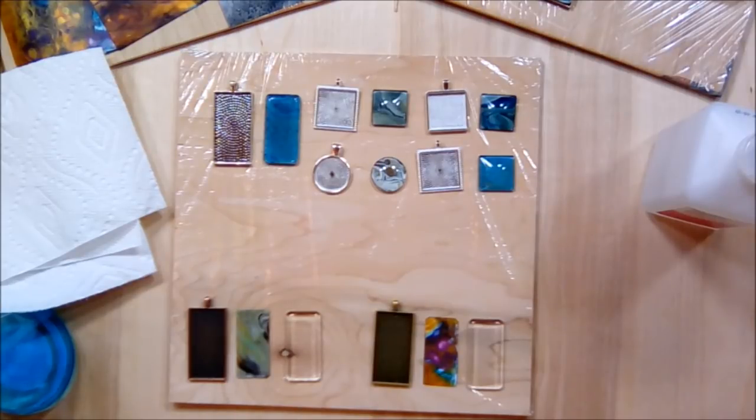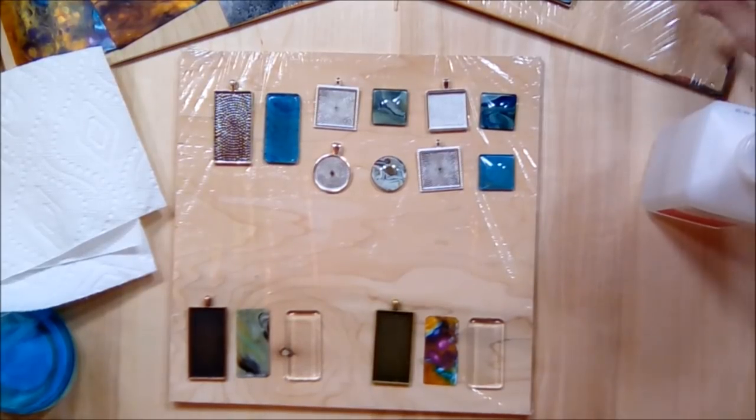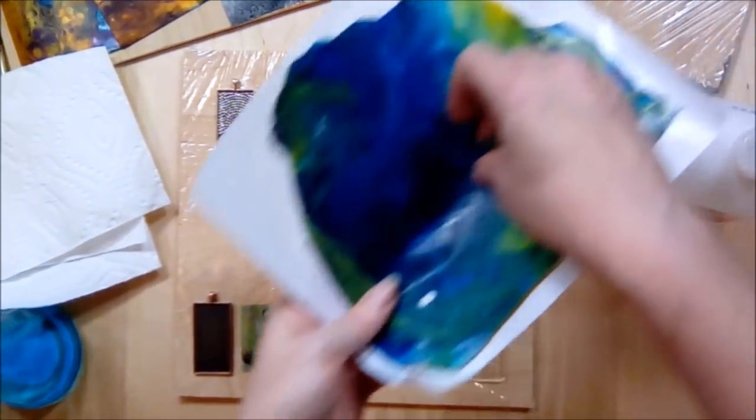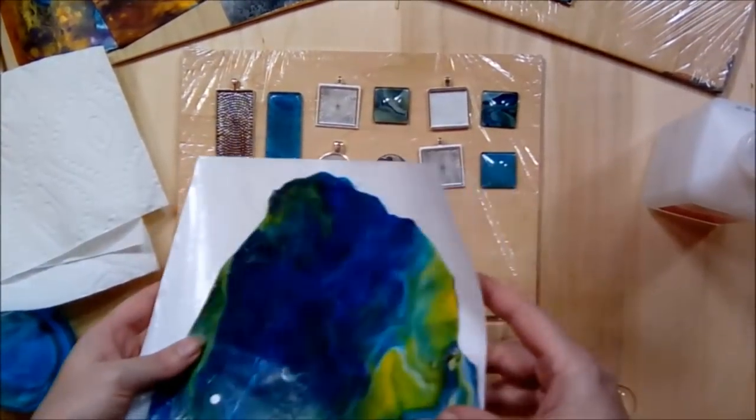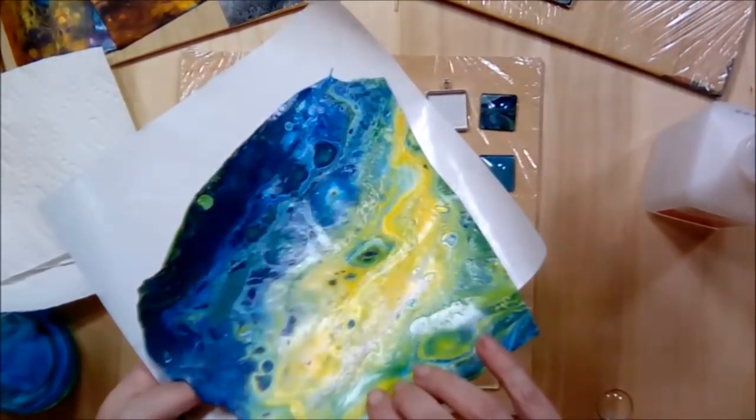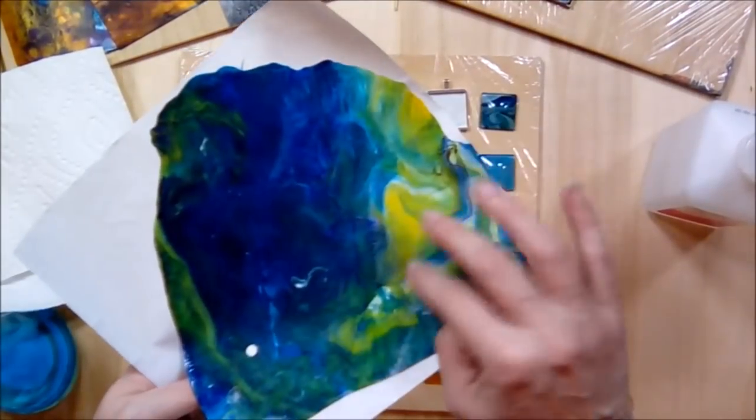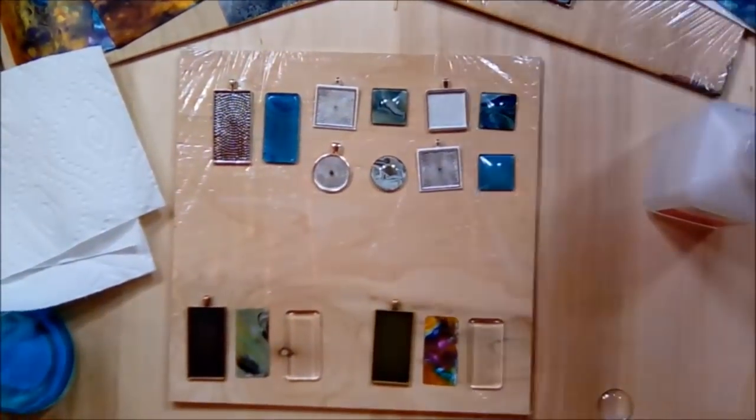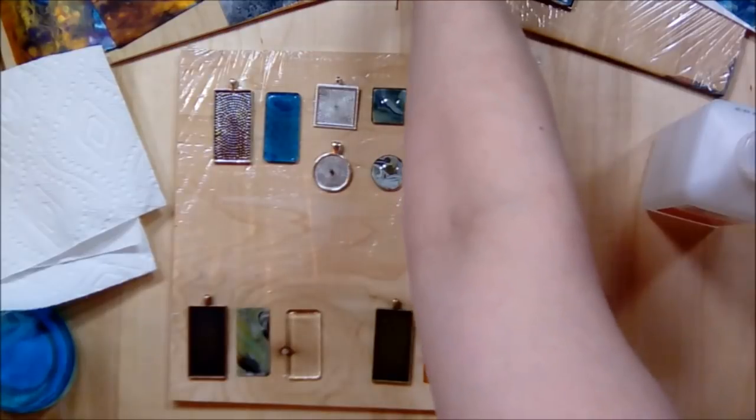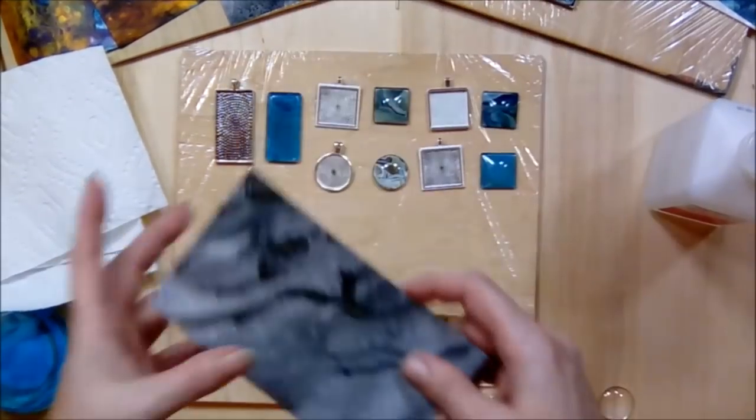But there's two ways that I make pendants. One is from the skin itself after I do a pour like this. So it's just one piece. That was the front side but I am interested in the back side today on that one. And then there is the pours on the Yupo that I do. This one's actually from last week.